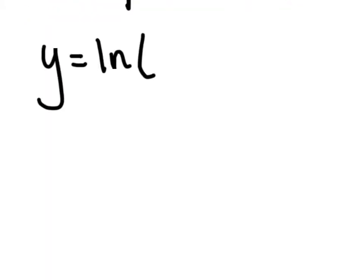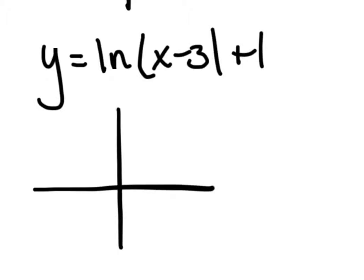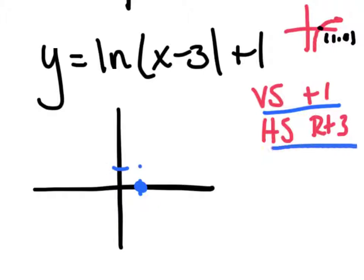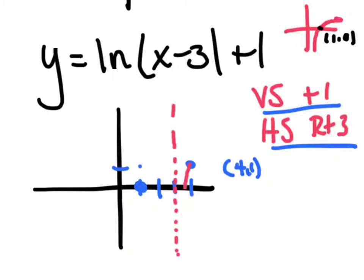Y equals the ln of x minus 3 plus 1. Hopefully you said a vertical shift of 1 and a horizontal shift of right 3. Log graphs don't go through the origin — log is a very slow growing function. Its mega point is one, zero. I'm shifting everything about that point, so I move it up 1 and right 3 to get the new point four, one. The vertical asymptote is always 1 behind the point, so I draw in my vertical asymptote and the graph grows super slow. The equation of this asymptote is x equals 3.